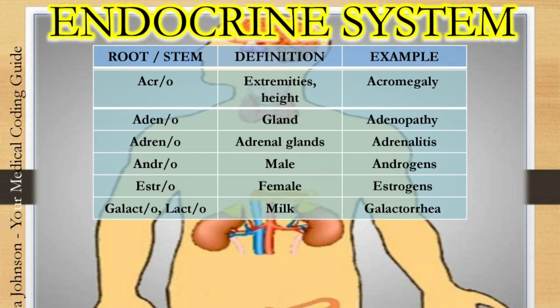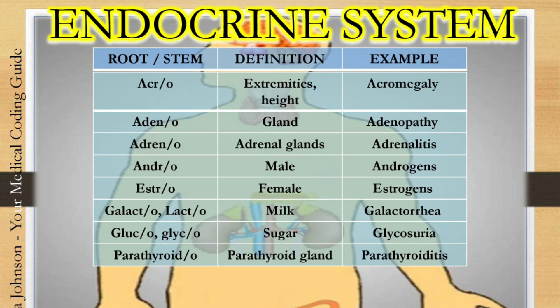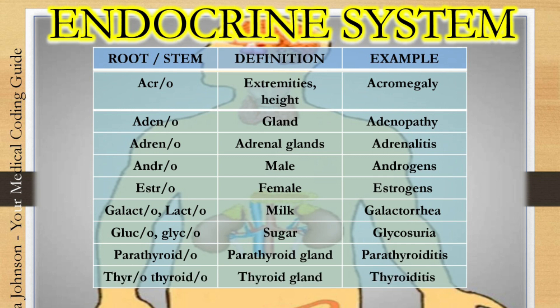The next one is galacto or lacto — it means milk. Example: galactorrhea, which means discharge of milk. The next one is gluco or glyco — both mean sugar. Example: glycosuria, which means sugar in the urine. The next one is parathyroido — parathyroido means parathyroid gland. Example: parathyroiditis, which means inflammation of your parathyroid gland. The next one is thyro or thyroido, which means thyroid gland. Example: thyroiditis, which is inflammation of your thyroid.